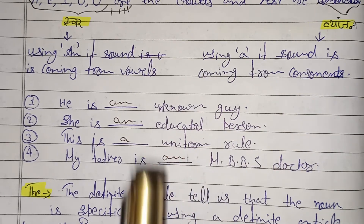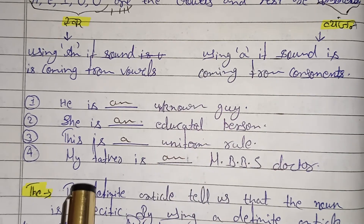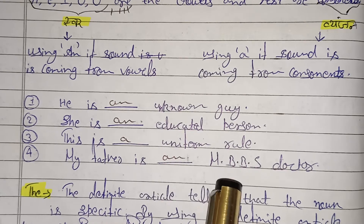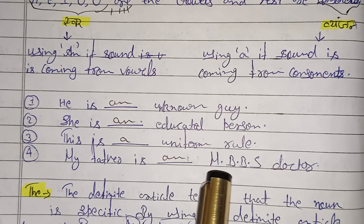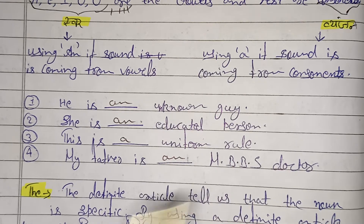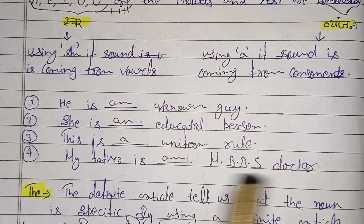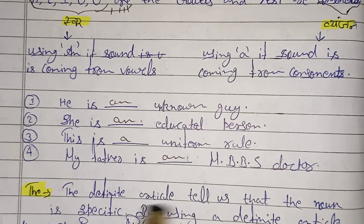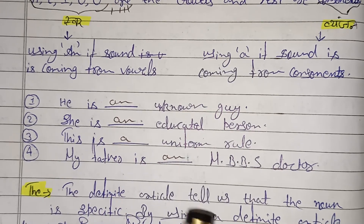This is a uniform — it will be 'A'. My father is MBBS — it will be 'A'. Small and big — it will be 'AN'.